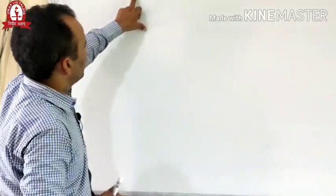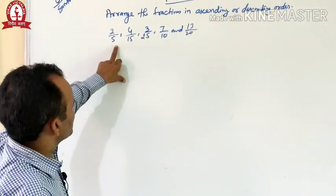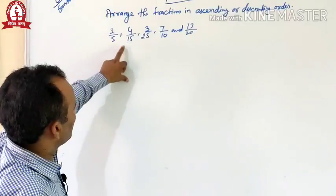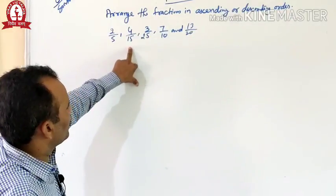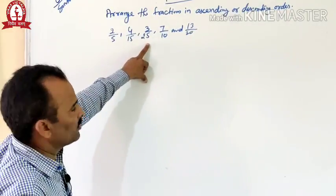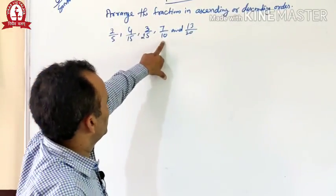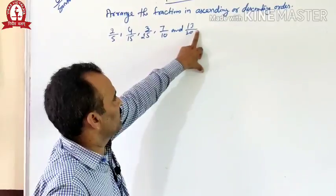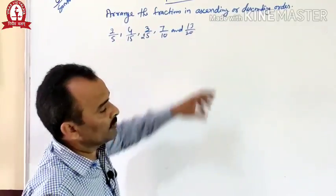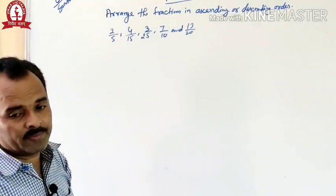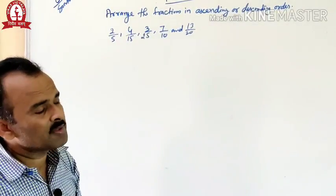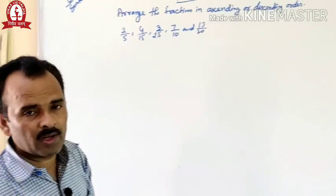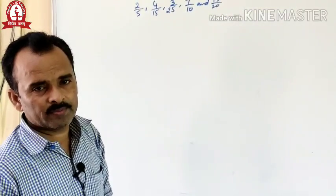Here you have given some fractions: 2 by 5, 4 by 15, 3 by 25, 7 by 10, and 13 by 20. All fractions have different denominators, meaning they are unlike fractions.